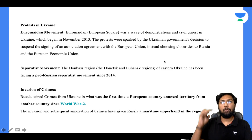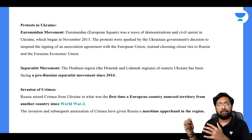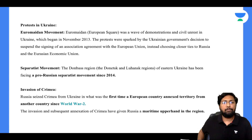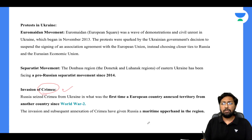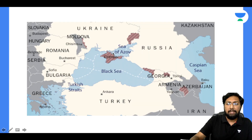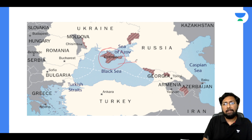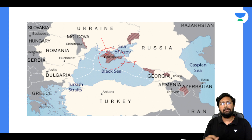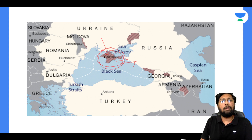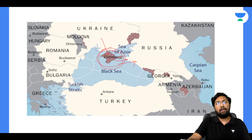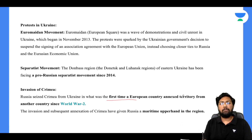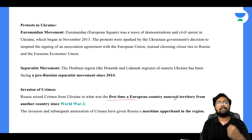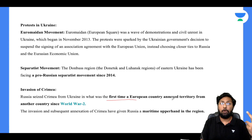If we look back at 2013-2014, two major things happened. Russia invaded and annexed Crimea — a small area that was part of Ukraine — primarily because of its natural resources and oil reserves. Russia annexed Crimea to exploit those oil resources. This was the first time since World War II that a European country annexed territory from another country, giving Russia a maritime upper hand and regional dominance.